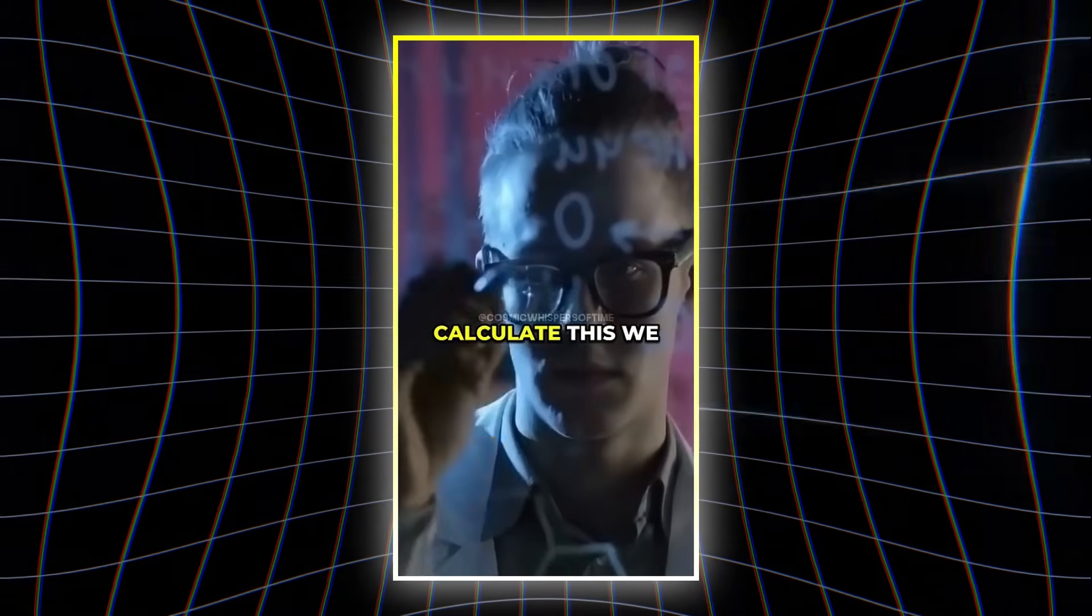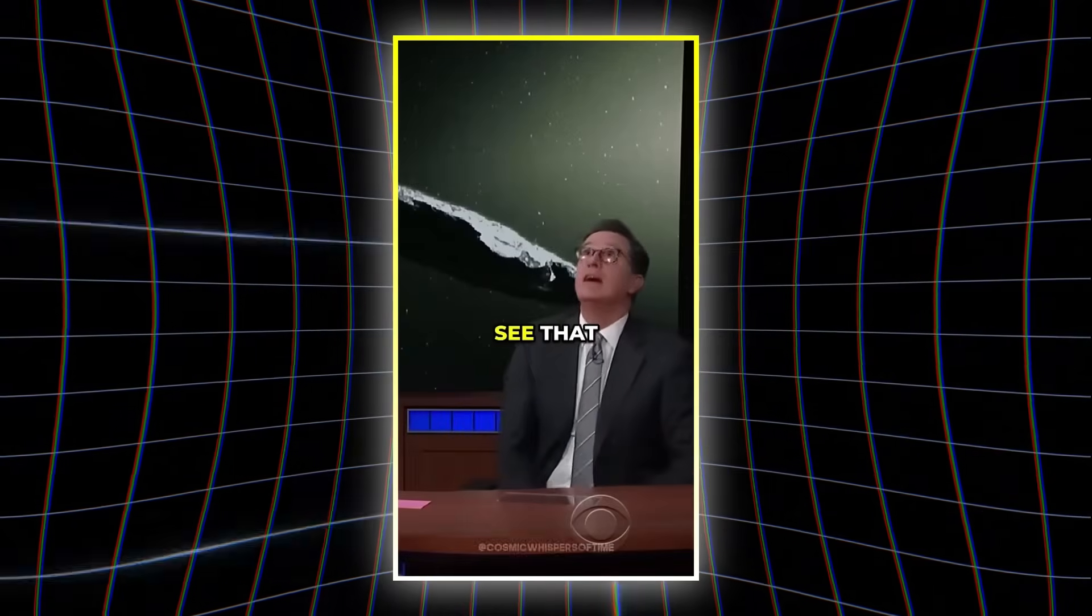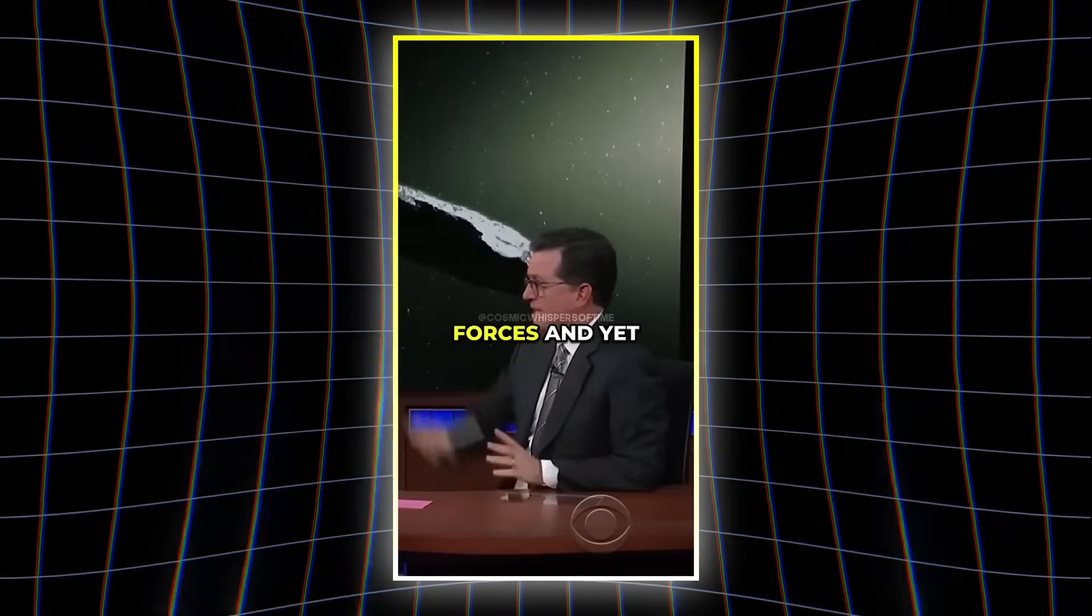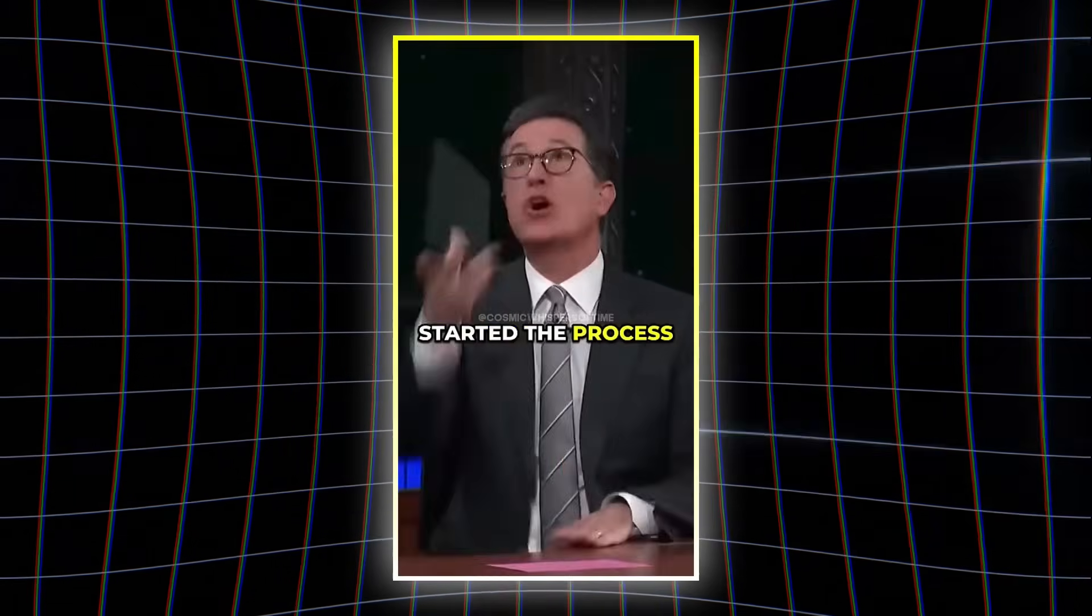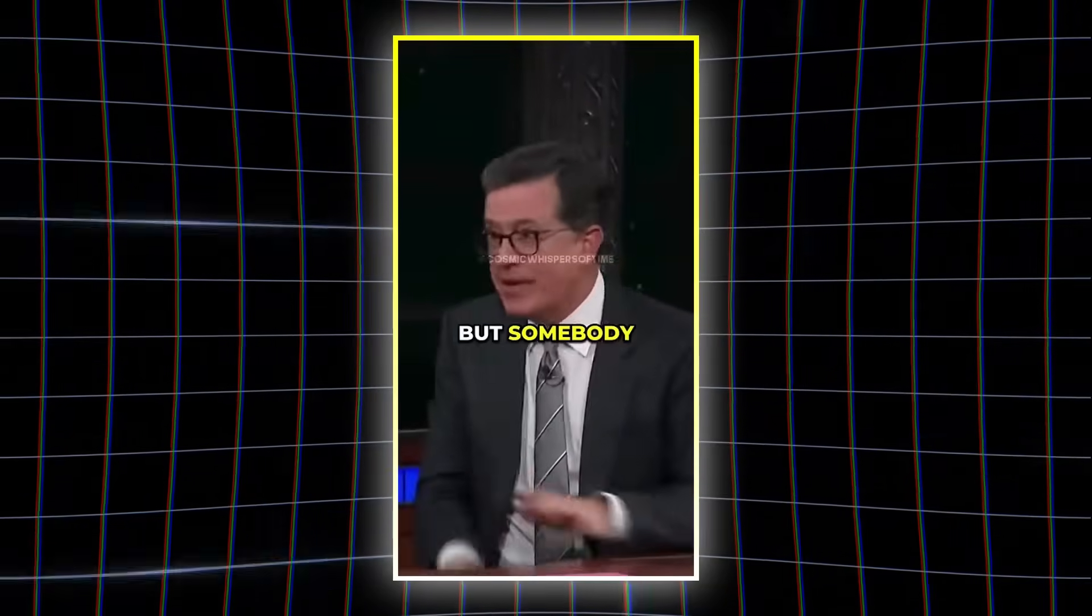How do you know? Because we calculate this. We have the laws of gravity, laws of physics. See that? That trajectory was completely controlled by gravitational forces, and yet a thinking creature started the process. If this came in, you'd go, oh, gravity did that, but somebody made it go to here.